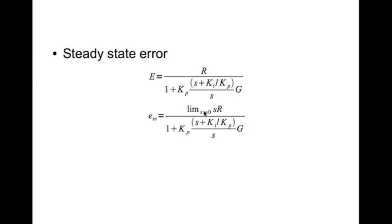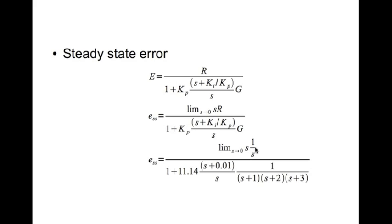We'll look at steady state error now. Same expression for error. But here we have, in addition to Kp and G, the PI dynamics. Steady state error ESS is limit as S tends to 0 of S times E of S, which is this. R is step. So this is the expression for steady state error.